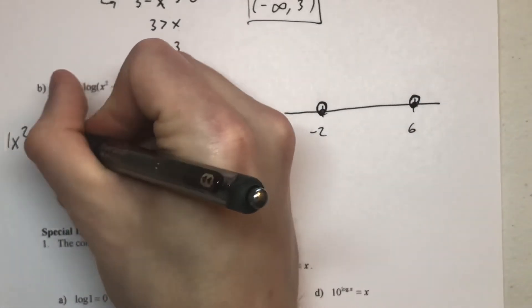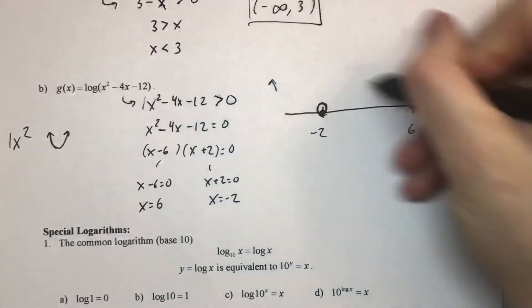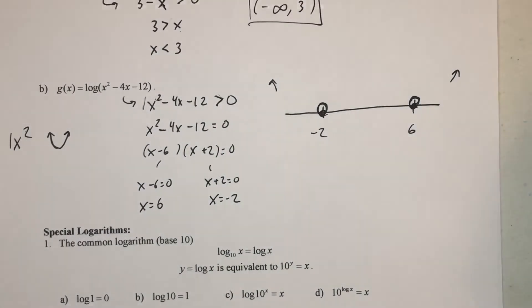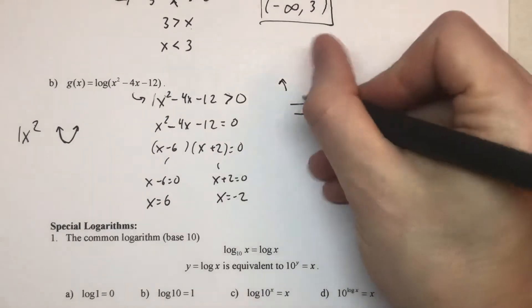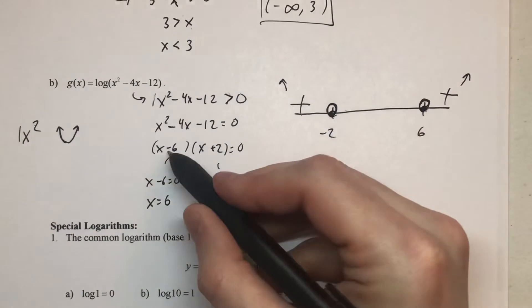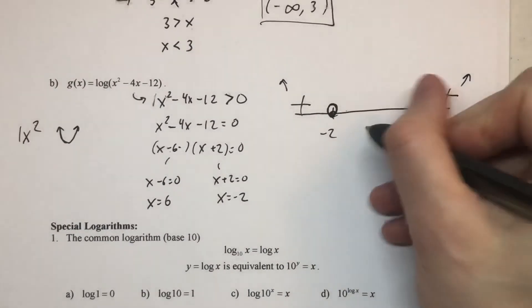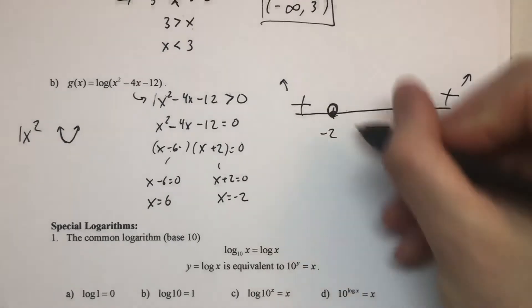So it should behave just like our normal x squared function. It should be rising to the left and rising to the right, meaning it should be positive here and positive there. And with both of these being a multiplicity of one single factor, it should be crossing on both those places. So it should be negative down here.